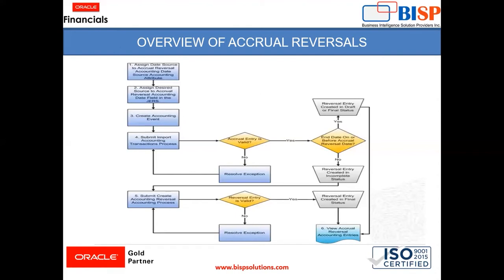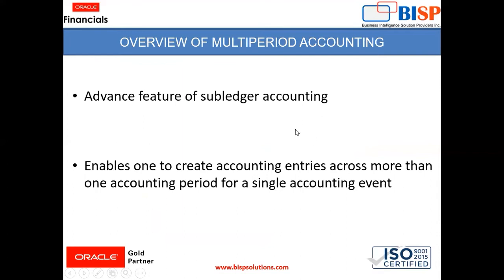We will see how to give accrual reversal and at what date it is applied in the Fusion Accounting Hub instance. But before that, let's also go through multi-period accounting. It is also an advanced feature of sub-ledger accounting, and it enables one to create accounting entries across more than one accounting period for a single accounting event.